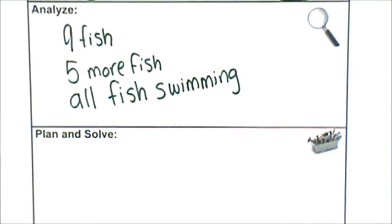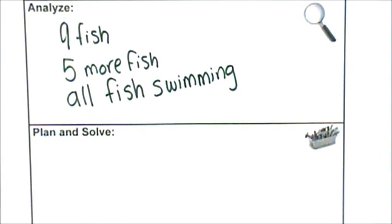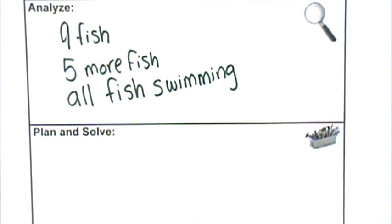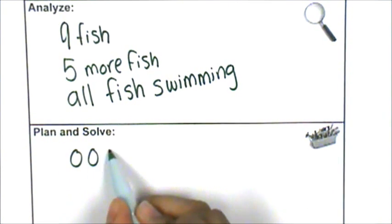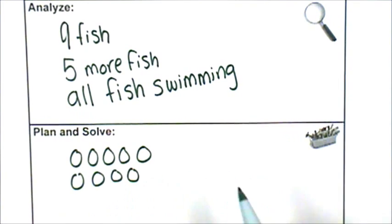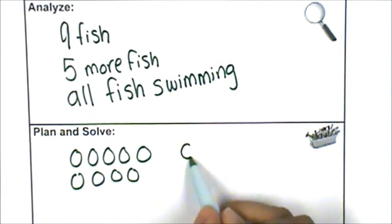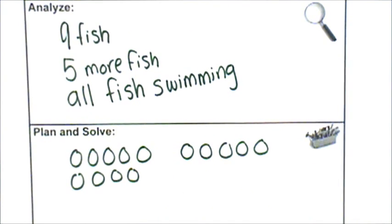Next, I'm going to plan and solve. What tools can I use to solve the problem? One thing I can try is to draw a picture. So, there were nine fish. There's nine. And then five more fish joined them.